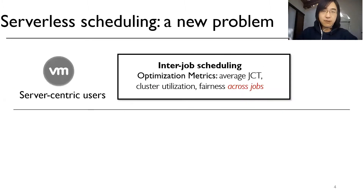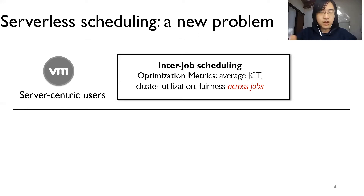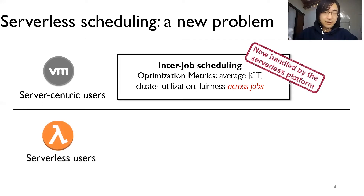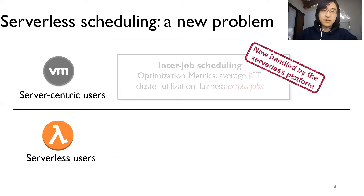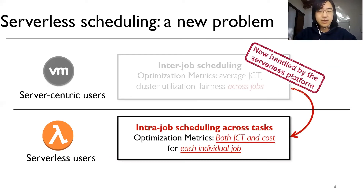This paradigm introduces a new scaling problem for serverless users. In server-centric settings, users usually need to manage a cluster of resources among multiple jobs, so the scaling policy needs to focus on inter-job scaling to optimize cluster-wise metrics such as cluster utilization and fairness. In contrast, in serverless settings, resource allocation across jobs is totally handled by the serverless platform, so users no longer need to worry about inter-job scaling. Instead, since each job is charged by its exact resource usage, the scaling policy needs to focus on intra-job scaling across tasks to optimize both JCT and cost for each individual job.